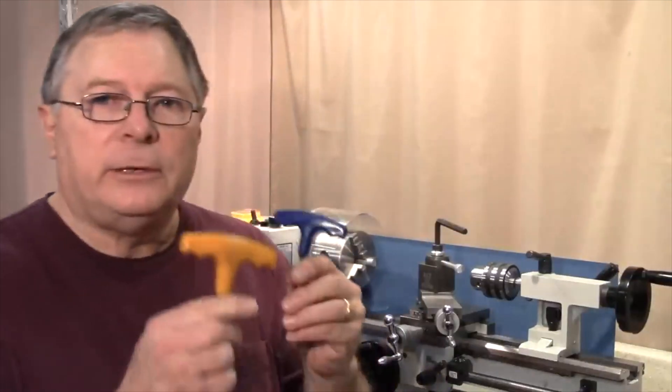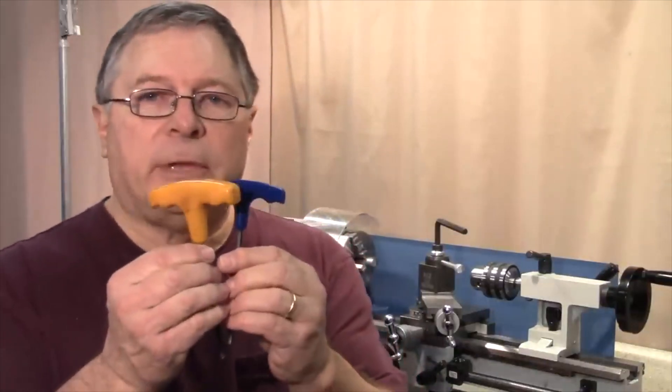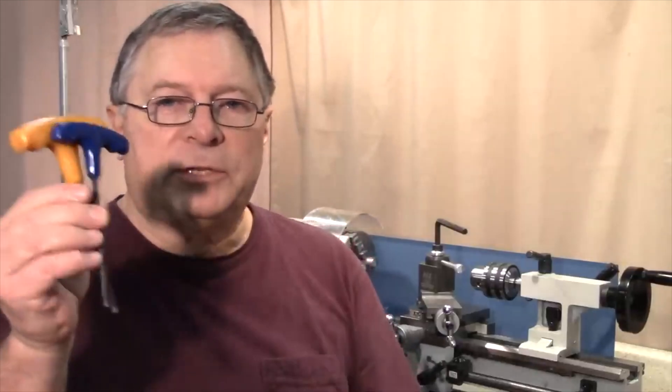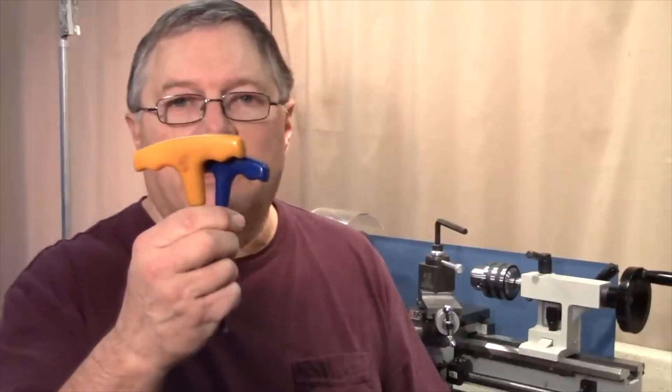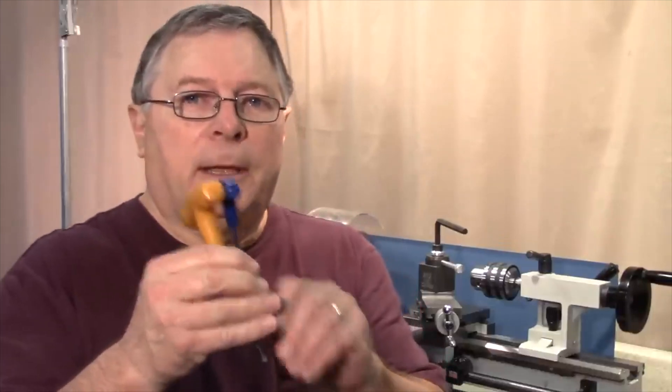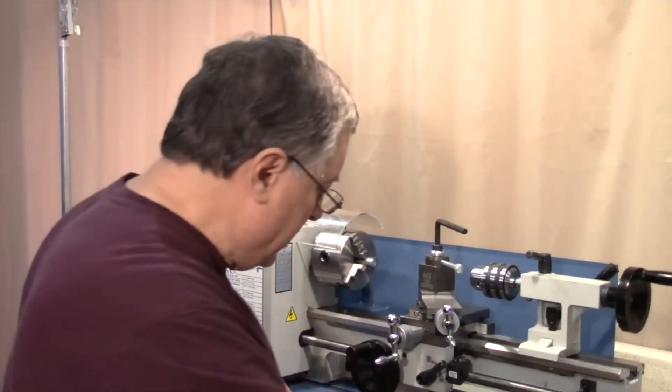I highly recommend that you get yourself a set of these T-handle metric wrenches. You can buy these in sets of 10 from Harbor Freight for about 10 bucks. I got these back in 1999 and they're still going strong, great tools to have on hand if you have a mini lathe.